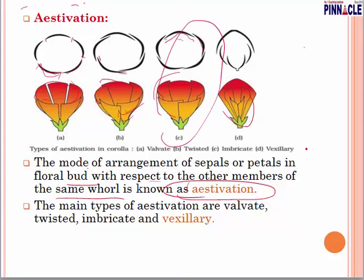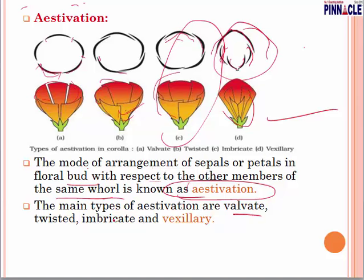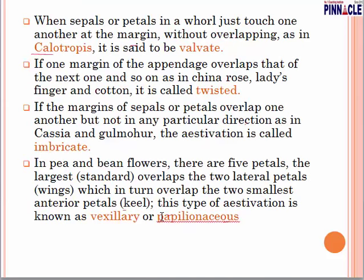In vexillary aestivation, there is a specific arrangement. The arrangement is called aestivation and the main types are: valvate, twisted, imbricate, and vexillary.